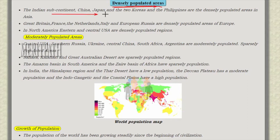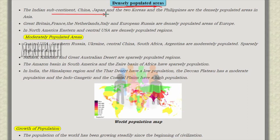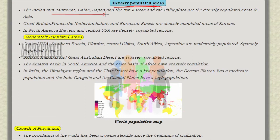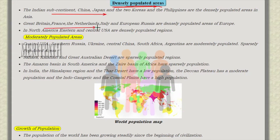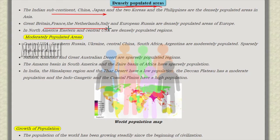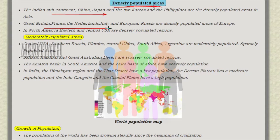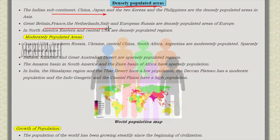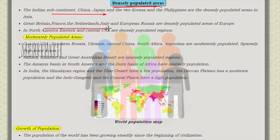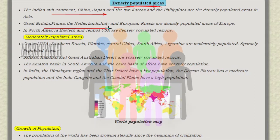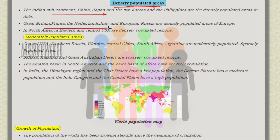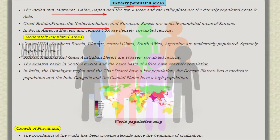The Indian subcontinent, China, Japan, the two Koreas, and Philippines are densely populated areas in Asia. Great Britain, France, Netherlands, Italy, and Europe are densely populated areas in Europe. North America and eastern parts of Central USA are also densely populated regions.